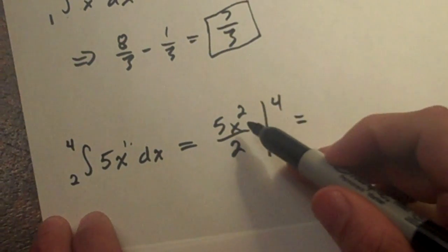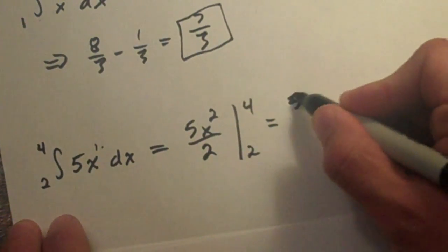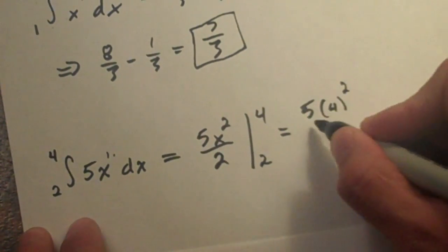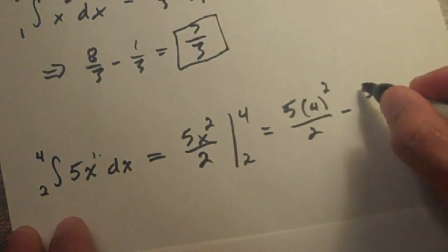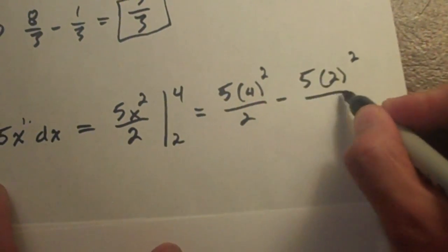And same thing, just fill in the blanks. So you fill in your x with your b which is 4. So 5 times 4 squared over 2 minus 5. And then do our a, 3 squared over 2.